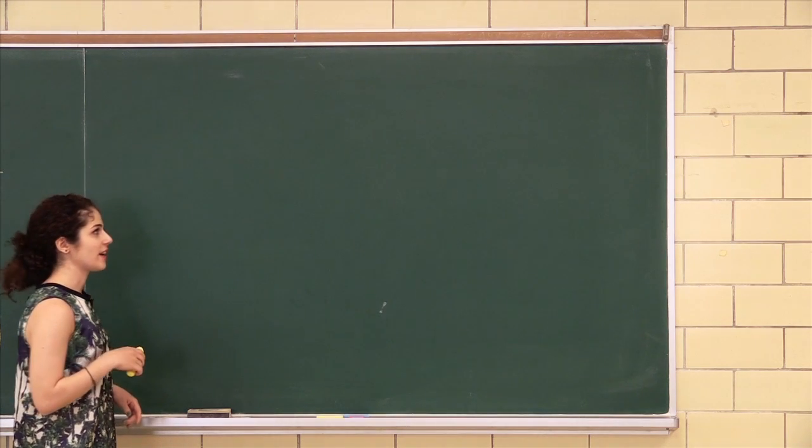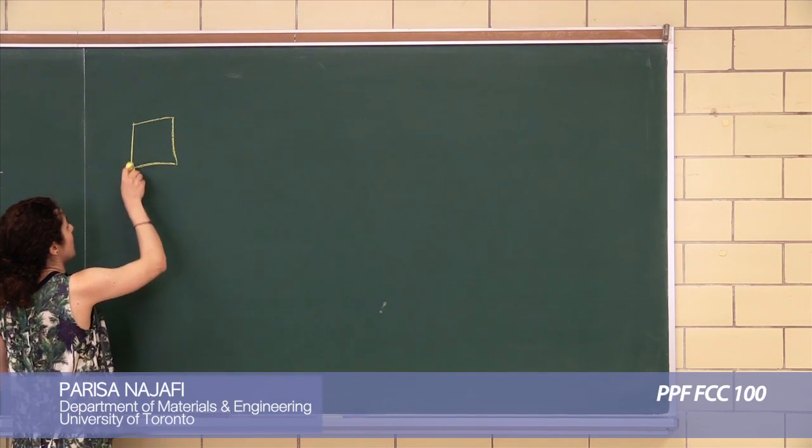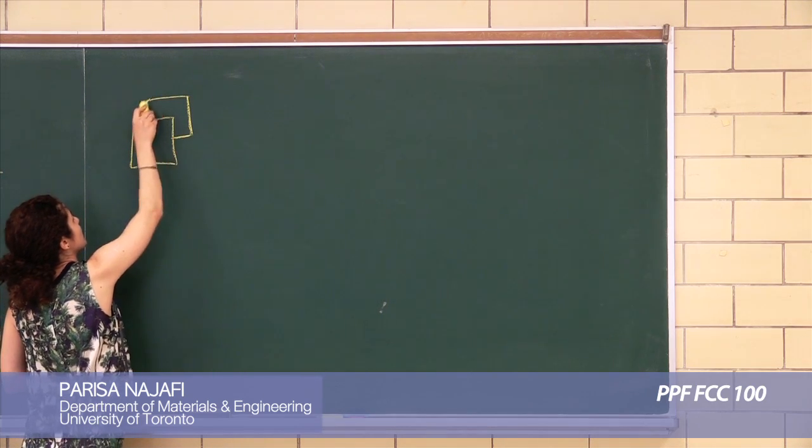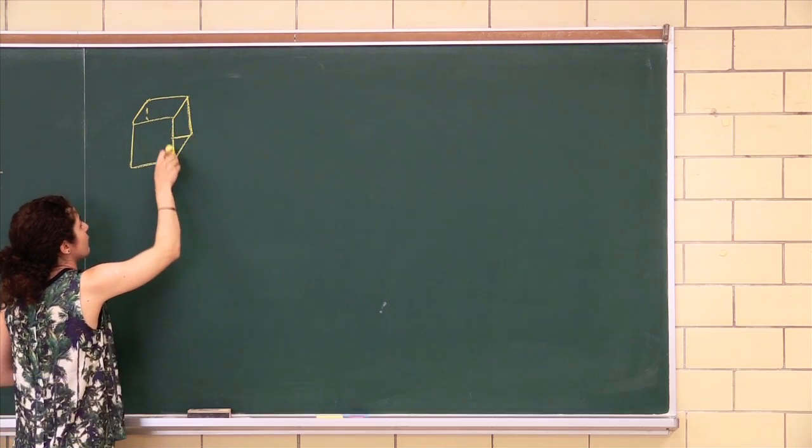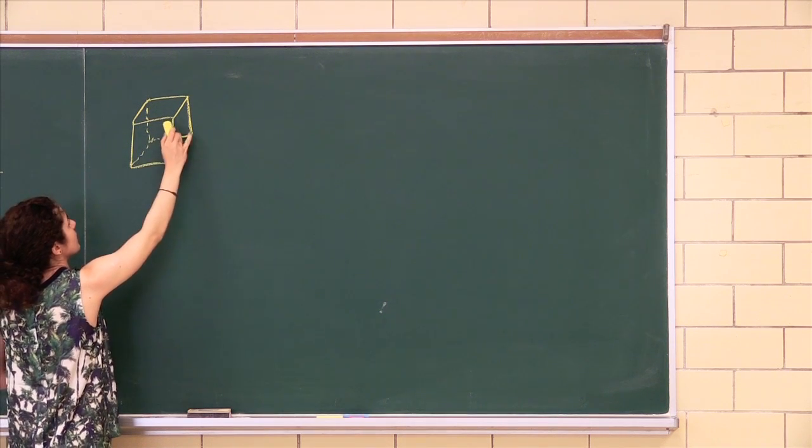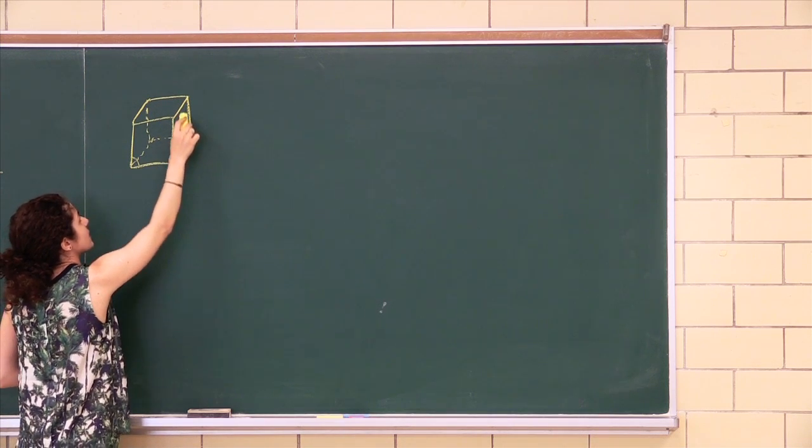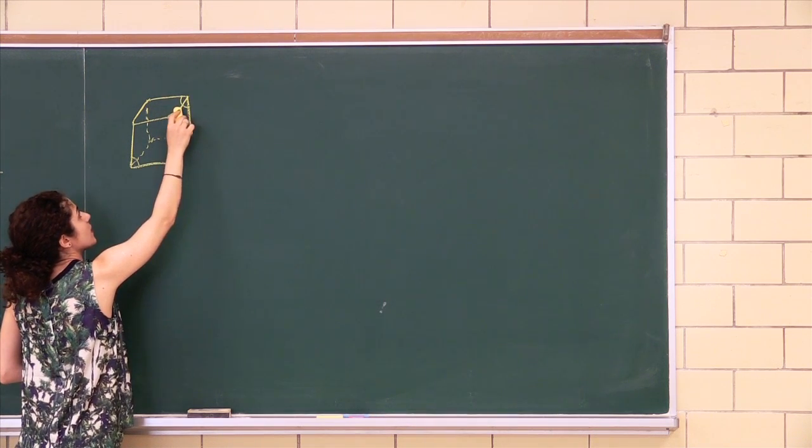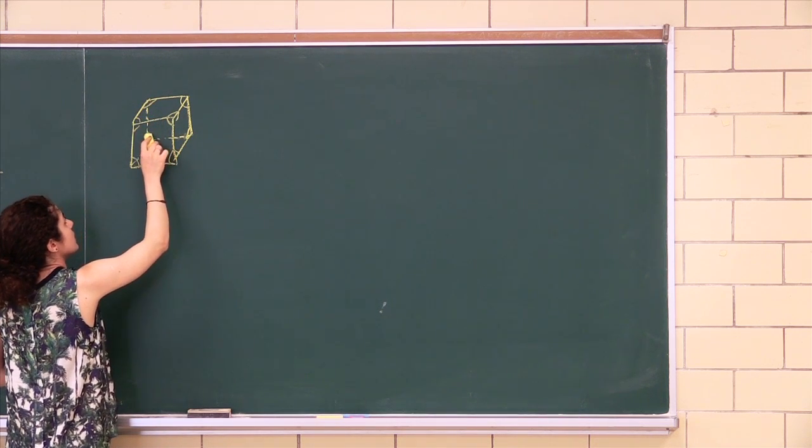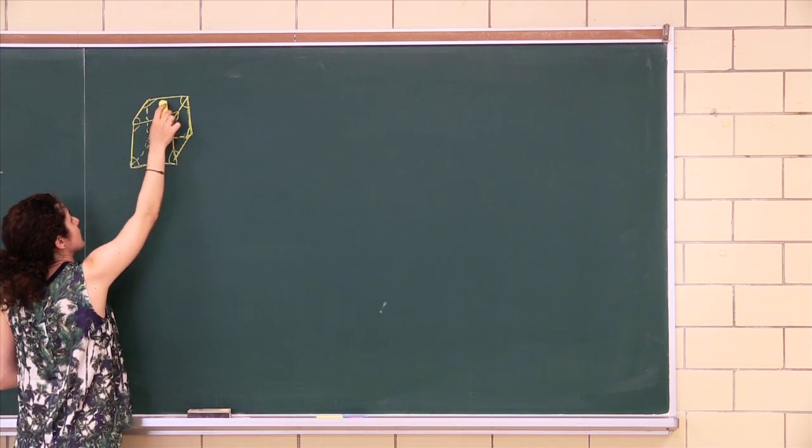So first we start off by drawing the FCC structure. Actually, every time you have a problem like this, it's kind of smart to draw it out first and then find where you're at. We know that every corner gets an eighth and every face gets a half.